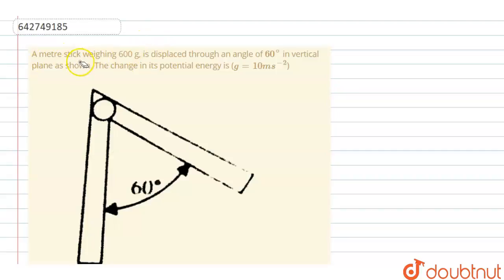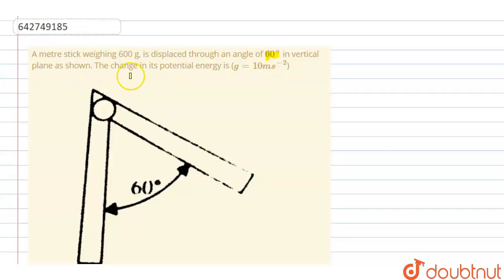Hey everyone, I'm going to explain this question. The question is: a meter stick weighing 600 grams is displaced through an angle of 60 degrees in a vertical plane as shown in the figure. The change in potential energy is — given g is equal to 10 meters per second squared.